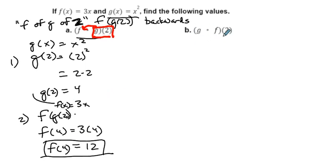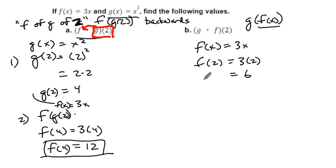All right. G of f of 2 is the same kind of thing. The only difference is we're reversing the order now. We want to find g of f of x, and in this case we're going to use 2. So we have to find f of x first. f of x is 3x. And so if we're going to find f of 2, we're going to use this function and put 2 into it. So we have 3 times 2, and that gives us 6. And so we now have f of 2.